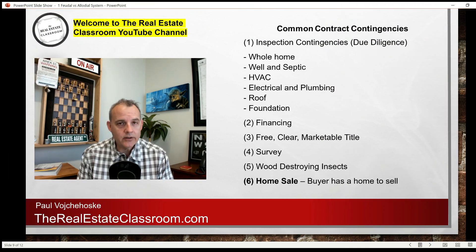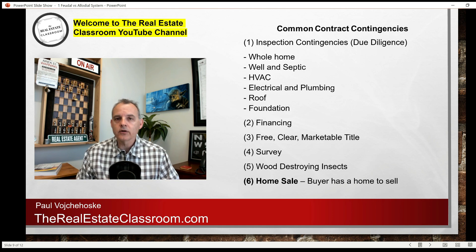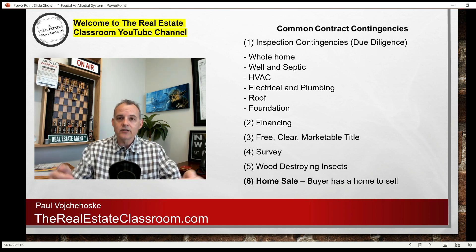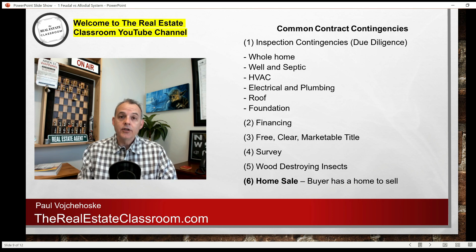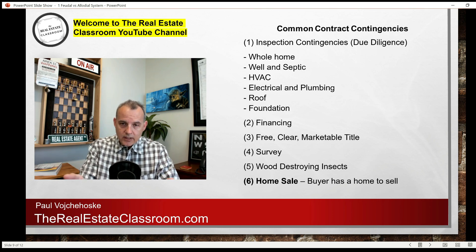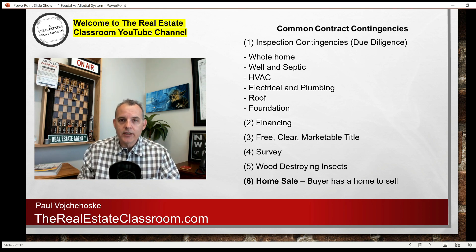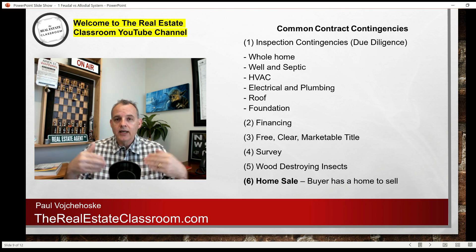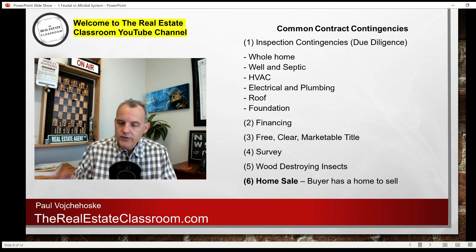Number six is a home sale contingency, which is very common. This is what we call the domino deal. Let's say I am buying your house, but I also own a house currently and I have to sell my house before I can qualify for financing for your house. So I'm going to put in an offer on your house with a home sale contingency — meaning the seller accepts the contract giving me 30 or 45 days, whatever the negotiated timeframe, to sell my house so I can then move forward with buying yours. Home sale contingencies are very common.